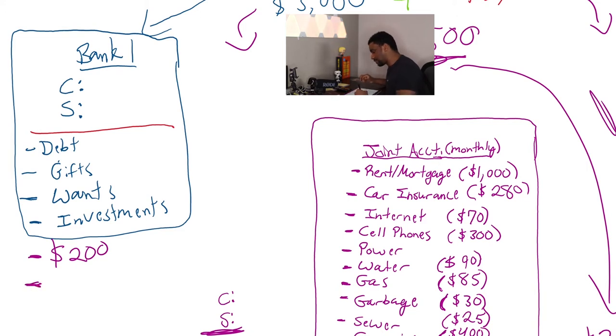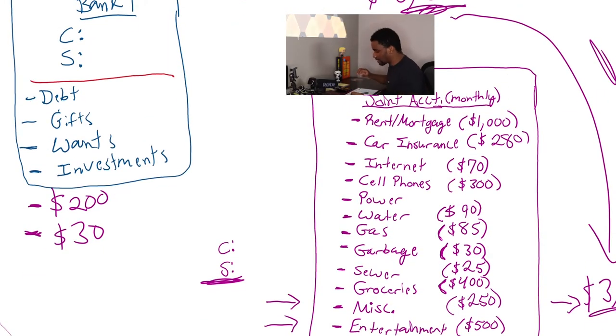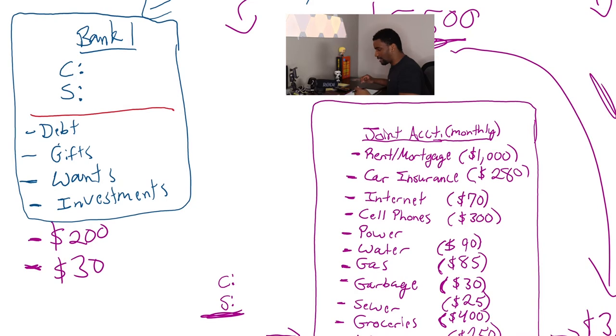Let's say that costs $30 because to be real, it kind of does cost $30. And let's say those are the only two things. Let's say he's not investing right now, he's not buying gifts right now and he's not investing. So he's literally just paying debt and he's paying for haircuts so he can look presentable for work, right? So that's $230 that he absolutely has to spend every single month, right?